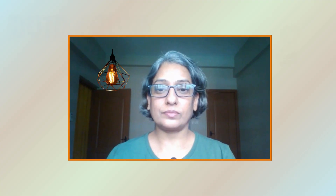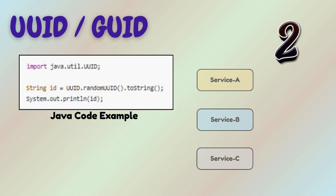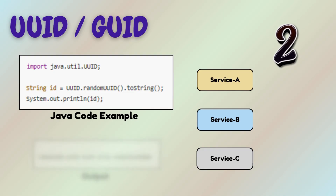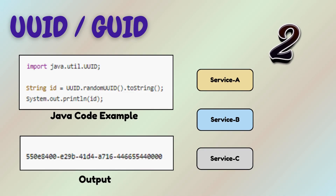We move to strategy two. UUIDs are decentralized — no DB involvement, no coordination. Each service can generate IDs independently. The output looks something like this.